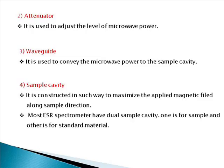The fourth component is the sample cavity, which is placed between two electromagnets and is constructed to maximize the applied magnetic field along the sample direction. Most ESR spectrometers have a dual sample cavity: one for the sample or paramagnetic substance and the other for a standard material. The standard material used in ESR spectrometers is diphenyl-picryl-hydrazyl (DPPH). The quality of the sample cavity is measured in terms of Q-factor.